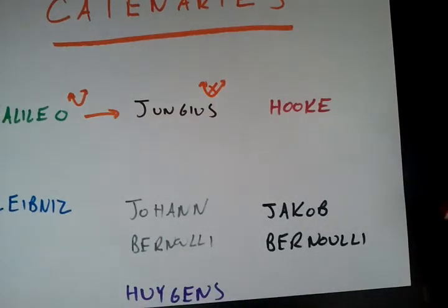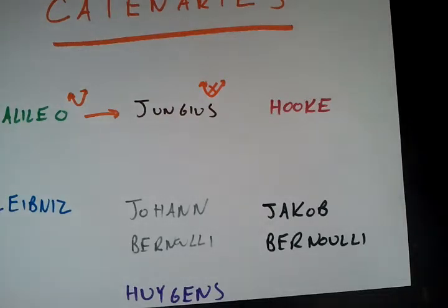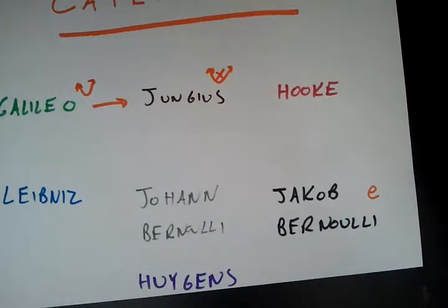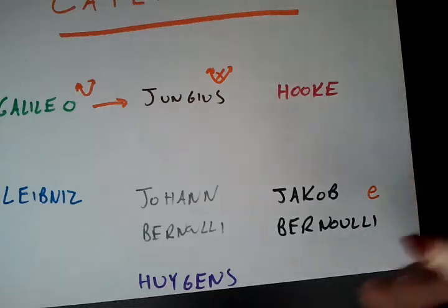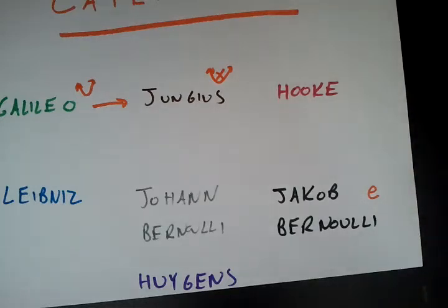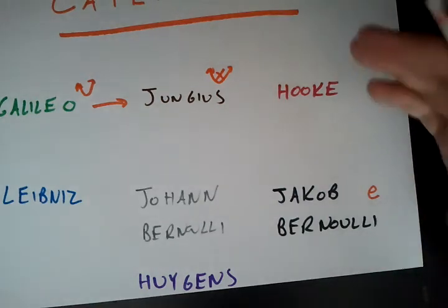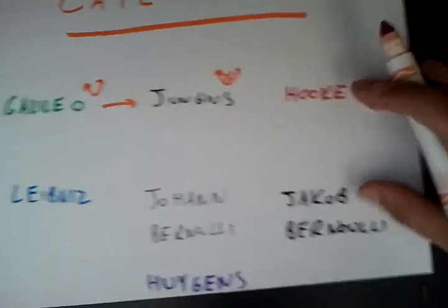And then what we had was a man called Jacob Bernoulli, who was best known for, he actually kind of discovered Euler's number e before Euler did. And even though that sounds weird, he didn't coin the term e, but he used it in his calculations of finance and stuff like that, so he's kind of attributed with that. He posed a challenge to the mathematical community, saying okay, we know that this thing is not a parabola, but who can find the equation of it?